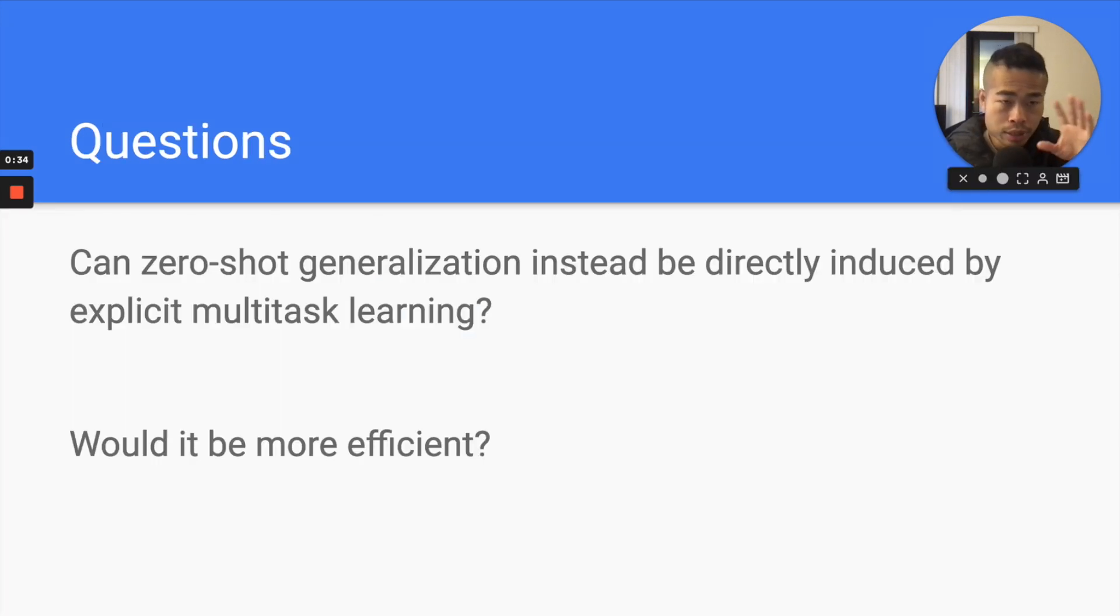There are two questions that's actually very essential for this paper. Can zero-shot generalization instead be directly induced by implicitly multi-task learning? Most large language models have zero-shot capability because they learn task knowledge during pre-training implicitly. But what if we explicitly introduce those tasks to the model? Will they be much better? Will it be more efficient? If it is more efficient, it means you can use a smaller model to achieve the same or even better learning capability.